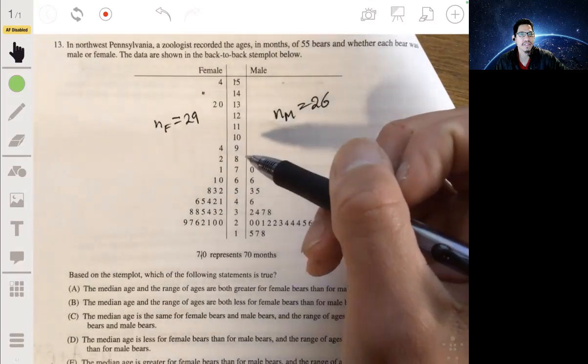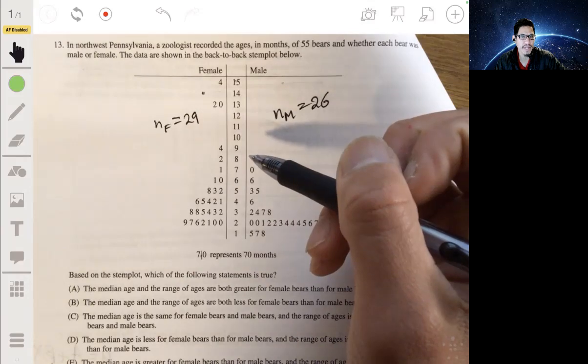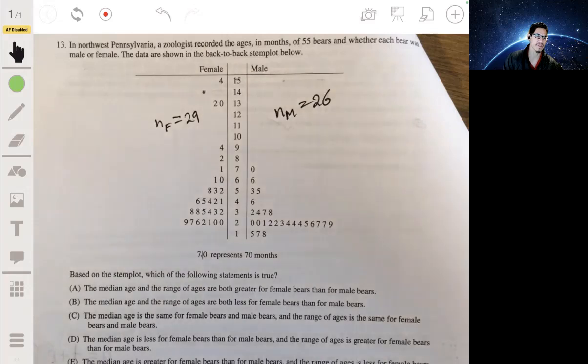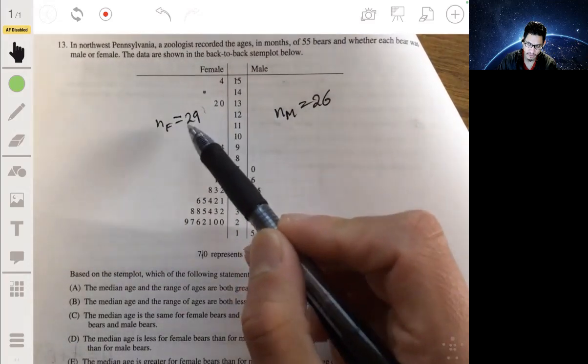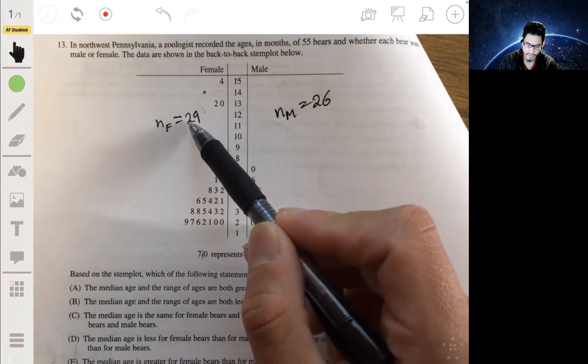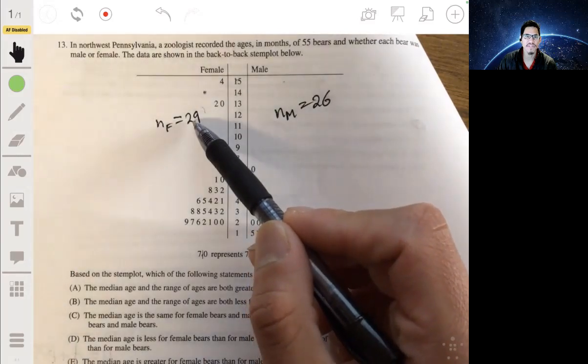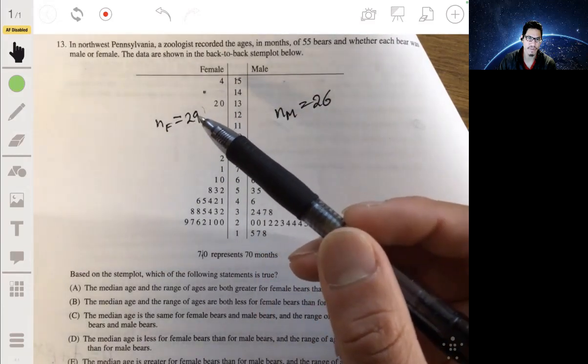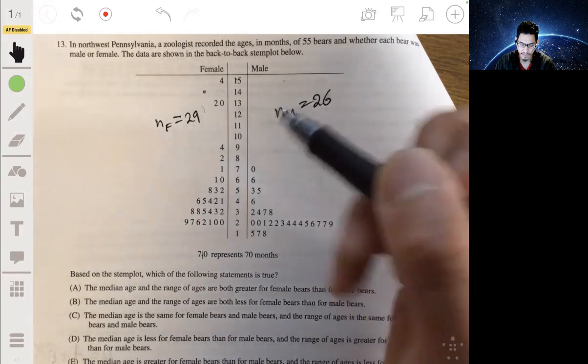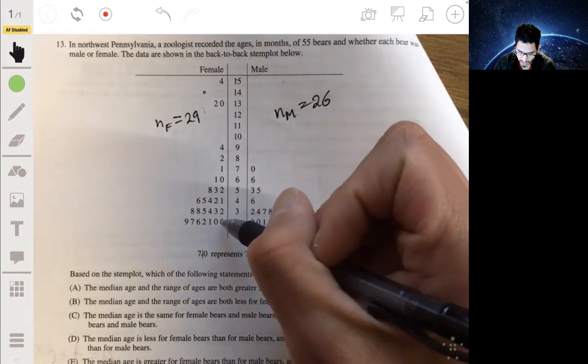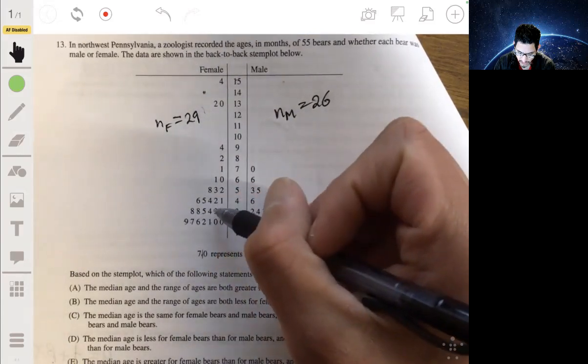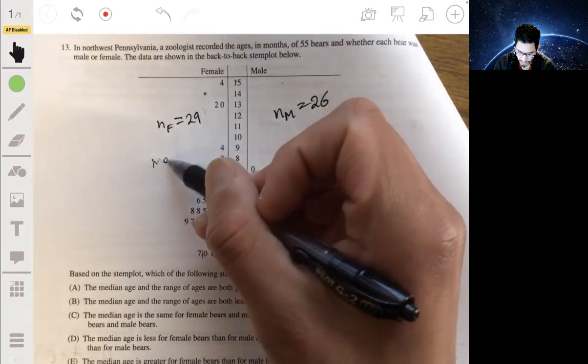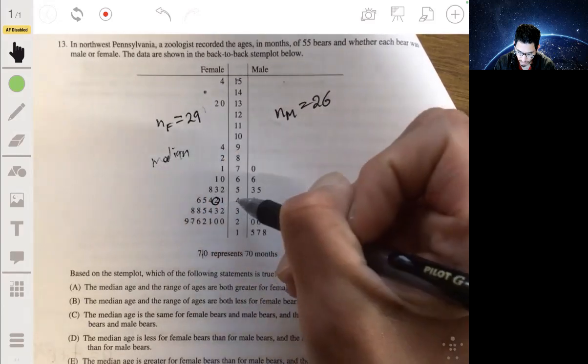So remember, the median of a distribution is the middle value, the middle ranking value, the arithmetic average. It's the middle value. So there's 29 values in the female distribution. So the middle of 29, there's like 29 people in the race. The 15th place would be like the middle, because they have 14 people ahead of them, 14 people behind them. So go in order. 1, 2, 3, 4, 5, 6, 7, 8, 9, 10, 11, 12, 14, 15. So the median for the females would be 42.